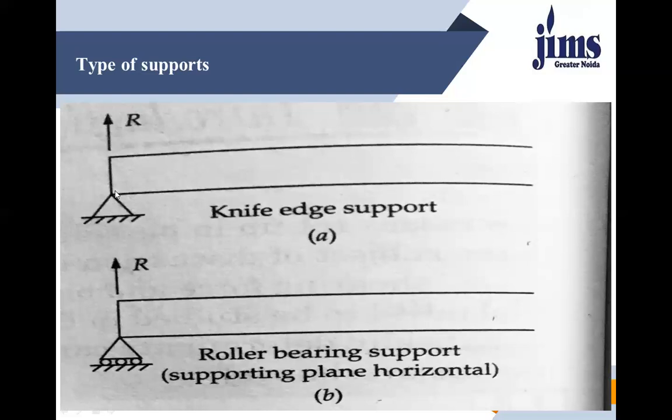The second type is roller support. In a roller support, the member can move horizontally but cannot move in the vertical direction. Similarly, the member cannot resist bending moment. So vertical reaction is non-zero, while horizontal reaction and moment reaction are zero. Slope and horizontal displacement are possible, so they are non-zero.